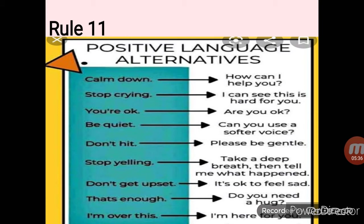Instead of 'stop crying', say 'I can see this is hard for you — are you okay?' Instead of 'be quiet', say 'can you use a softer voice, please?' Instead of 'don't hit', say 'please be gentle.' Instead of 'stop yelling', say 'take a deep breath, then tell me what happened.' Instead of 'don't get upset', say 'it's okay to feel sad' or 'I'm here for you.'